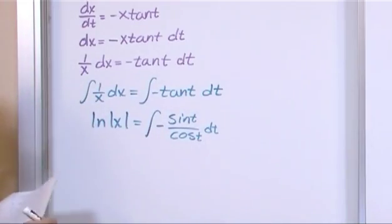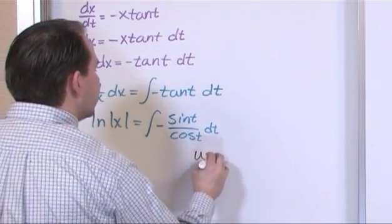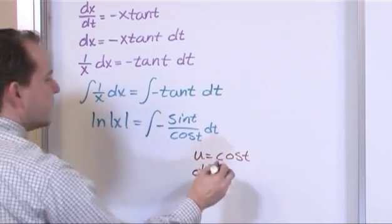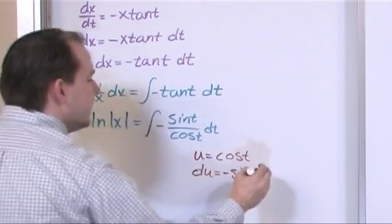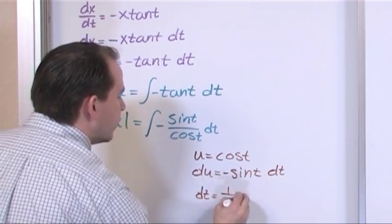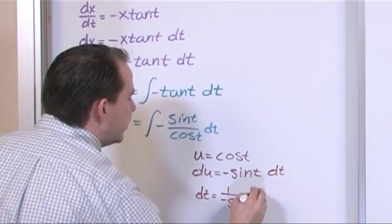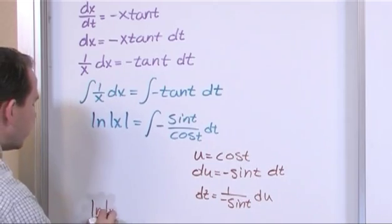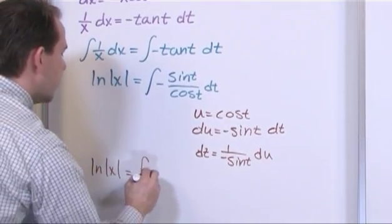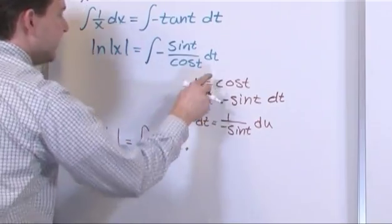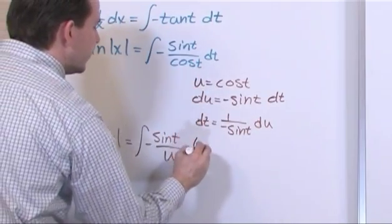So once you write it like that, you might then start to see something. Because if I say that u is equal to cosine of t on the bottom, and then I say du is equal to derivative of cosine is negative sine of t dt, and then I solve for dt so I can plug it back in here. So I say dt is equal to 1 over negative sine t du. Then I can put this substitution in place and make some progress. So let's see what we get here. We'll have on the left, natural log of x. That's not going anywhere. On the right, we'll have the integral of negative sine t over cosine t. But we said that was equal to u times dt. But we just found dt is equal to this stuff. So it's negative 1 over sine